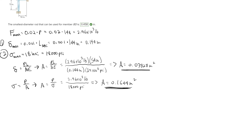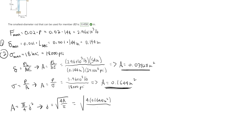Now we solve for the diameter using A = (π/4)d², rearranged to d = √(4A/π). Plugging in A = 0.1644 in², the diameter is equal to 0.4575 inches. And that is it for this problem.